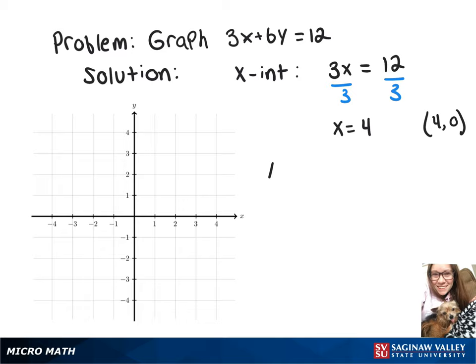Now to find the y-intercept, we'll set x equal to 0. So that will give us 6y equals 12. Now divide by 6, and that gives y equals 2. So that will be a point of 0, 2.